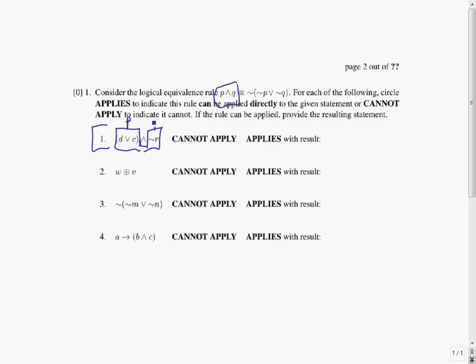So there is a match, which means the rule can apply. So we can circle that right away. And the result is going to be just right out this right-hand side, except with P replaced by D or C, and Q replaced by not R. And since we're trying to do it directly, I'm going to just write it directly. I'm not going to get rid of any double negations or anything like that.